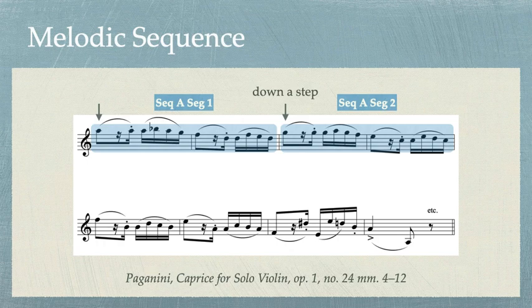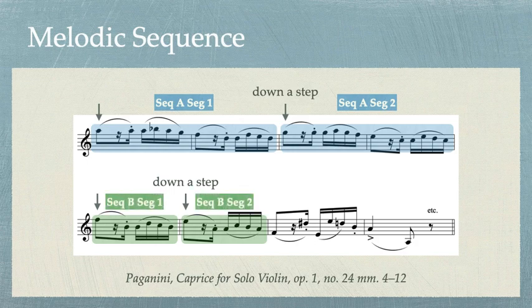However, it stops here because we have another sequence in the second system. This one is just one bar in length instead of the two we saw before. These segments are also repeated down a step, just as we saw in the first sequence. We're going to label these Sequence B, Segments 1 and 2, because they're not part of Sequence A but instead their own new sequence. You'll notice that the melodic material for Sequence B has been taken from the second measure of our original Sequence A and just developed a little bit. This is the technique of using sequences for melodic development, furthering the melodic ideas.